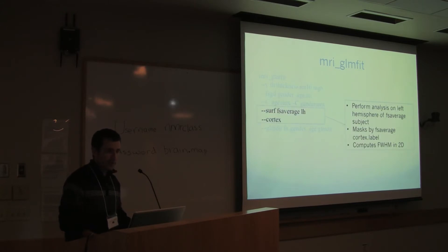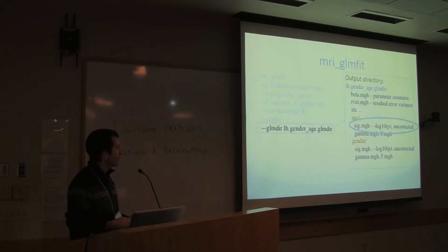These are two options to specify that we want to run the analysis on the surface using fsgd on the left hemisphere. Cortex tells the program that it's going to use cortex.label to mask analysis, essentially to leave out the inner wall of the hemisphere that we know is meaningless. And this is just the output. The output is a directory where the program will write all the information that we want to display afterwards.